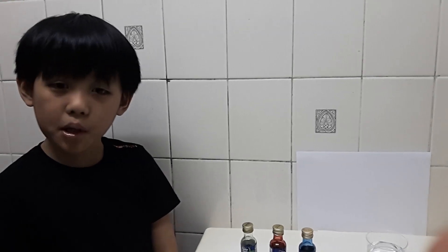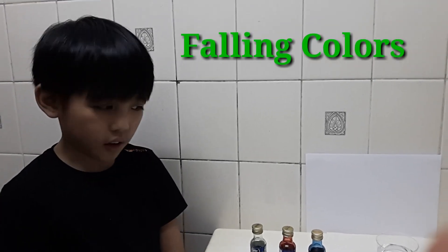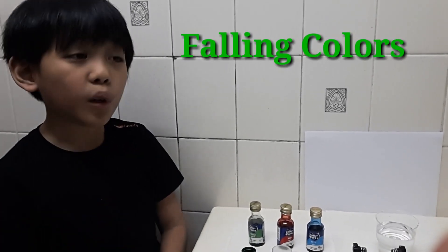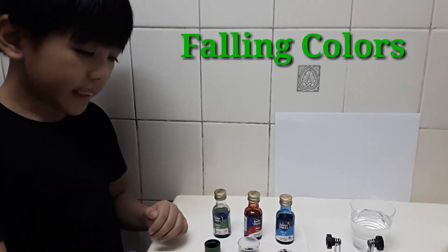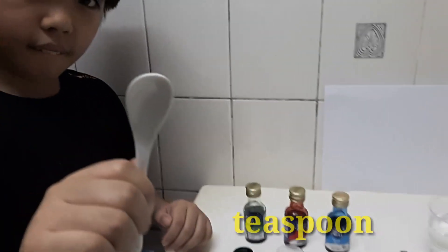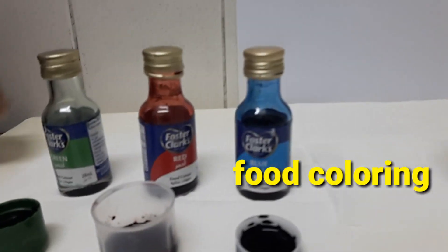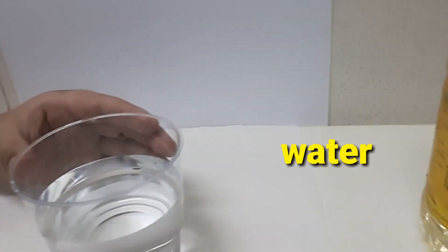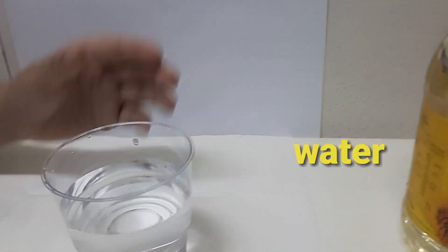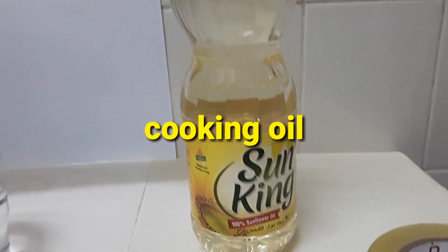I'm going to name this experiment Falling Colors. For this experiment, we will be needing a teaspoon for stirring, food coloring with different types, some water in a transparent container, and oil, cooking oil.